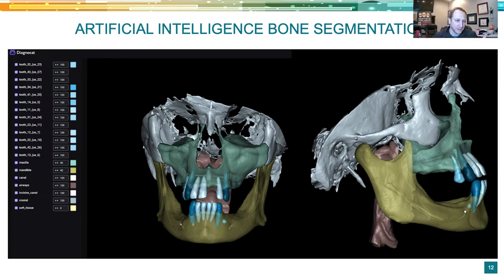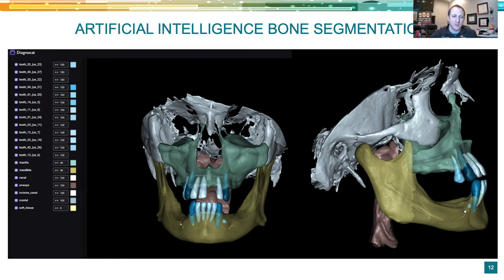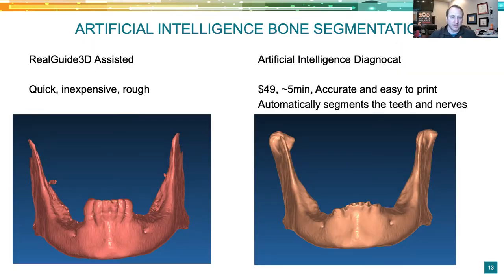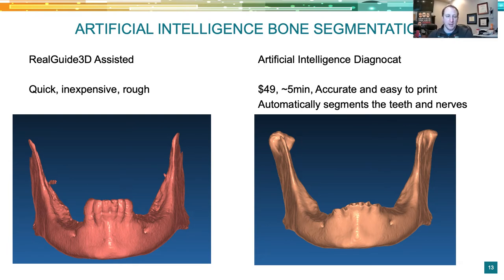What can we do with this? We can overlay it into our treatment plan, bring it back into our CT, look more specifically at root form, or 3D print the teeth. What we really want to do is print this. Here's the RealGuide 3D — quick, inexpensive, rough draft. Then the AI version — $49, five minutes, super accurate, easy to print, and you can toggle on and off the teeth and nerves.